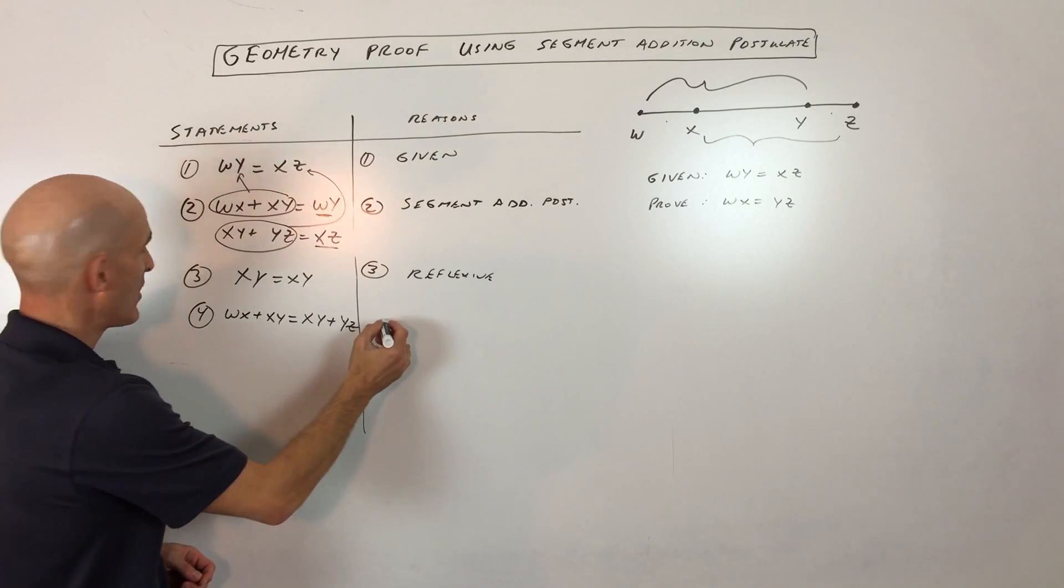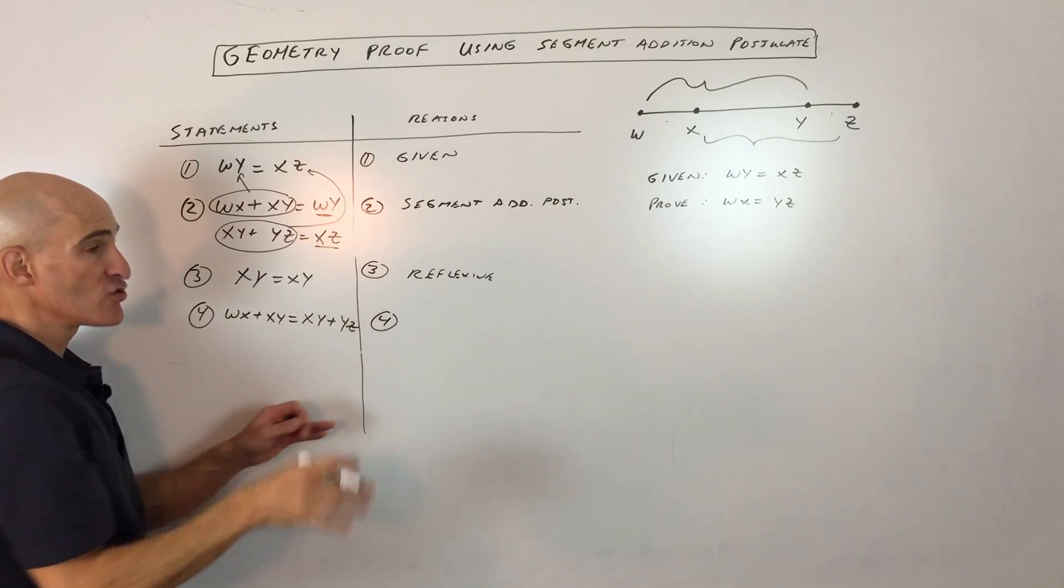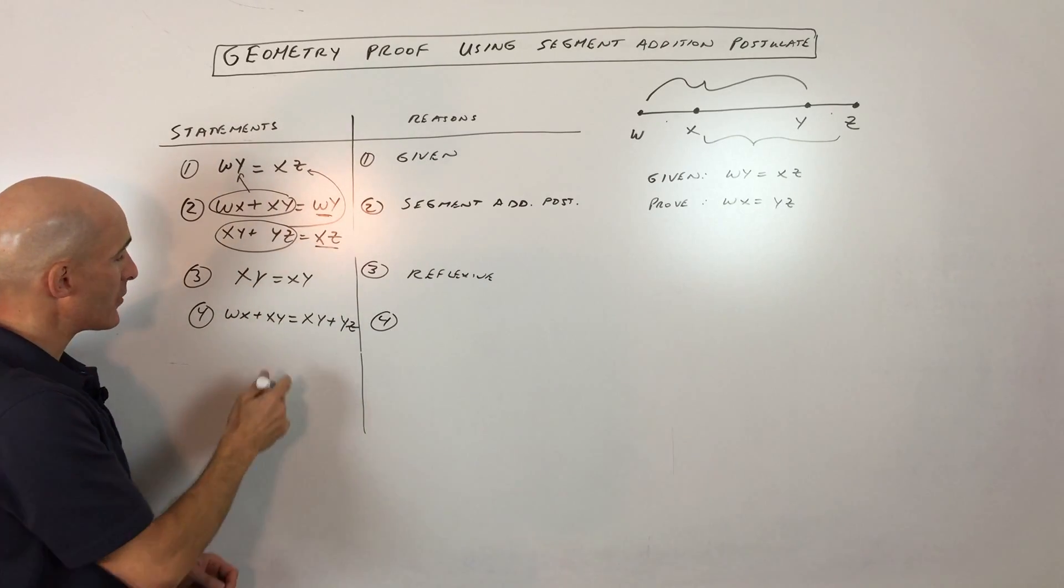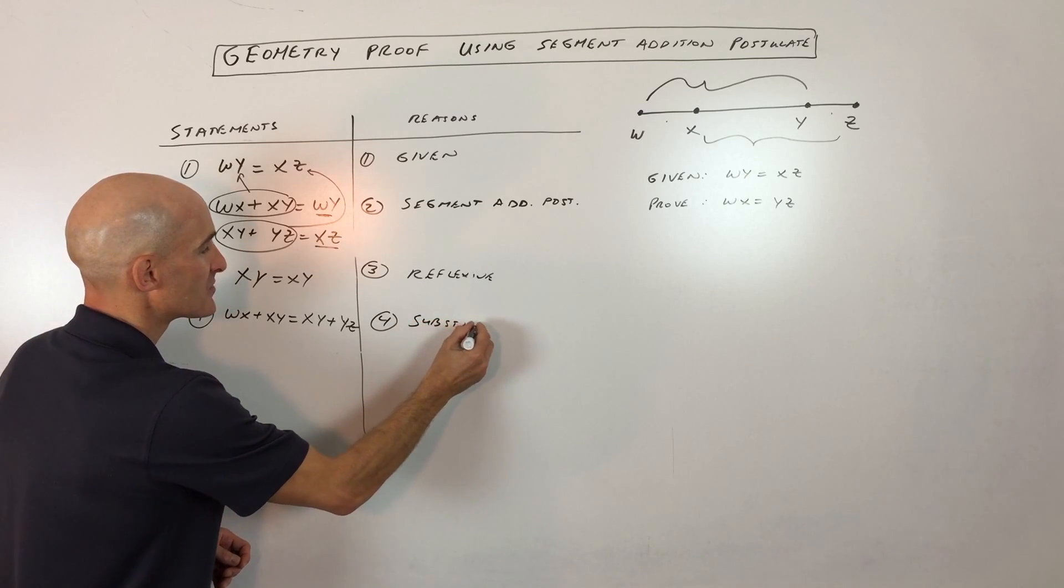So that's just a little funny way of remembering. But basically what we have now is we did a substitution. Since the two quantities were equal, we replaced one with the other. And that brought us to this step right here. So this was substitution.